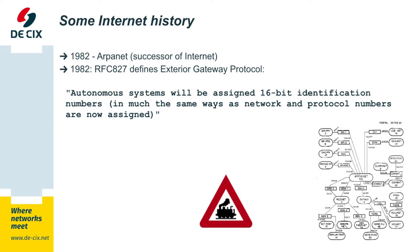Let's go back in time when the internet was young in 1982. It was quite a bit smaller than today, but the developers already saw that it would grow and already saw it as a network of networks. So to make sure it could scale and accommodate the growth they expected, they invented the term autonomous system.